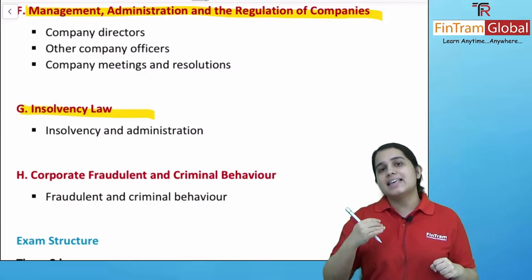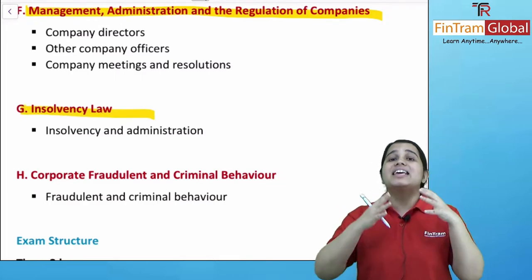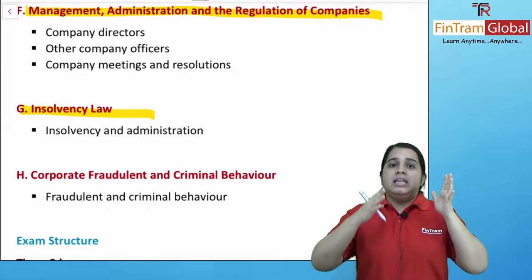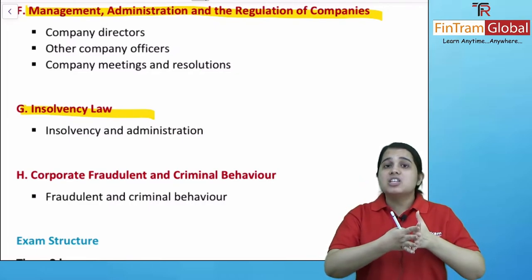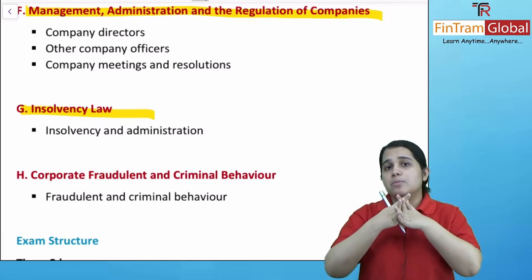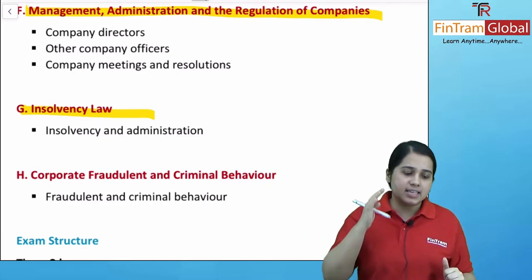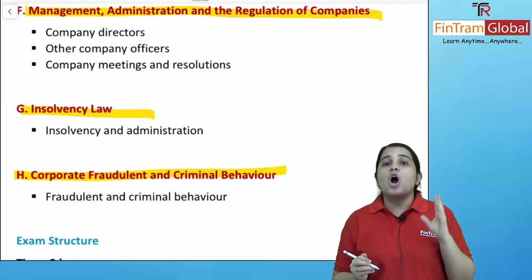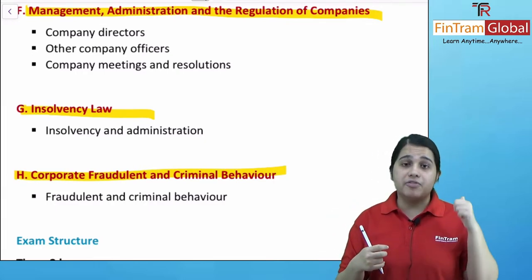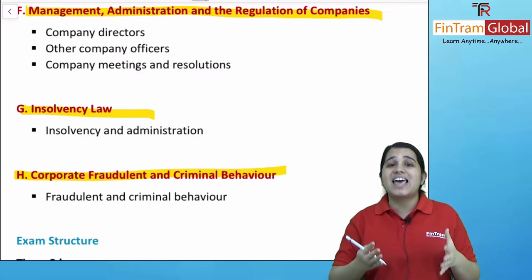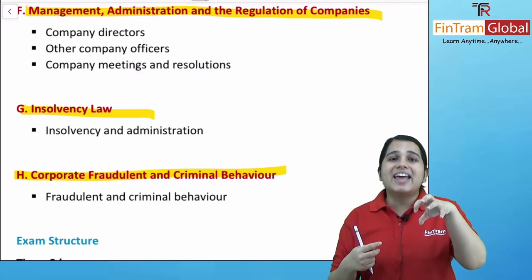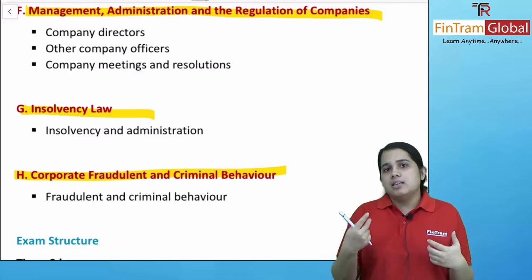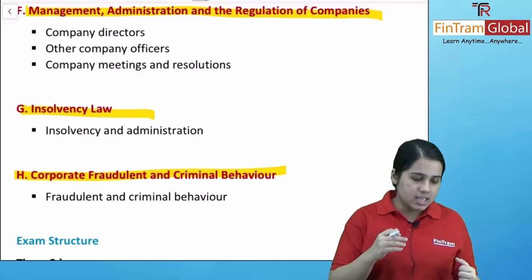Finally, you will move to the next syllabus area which is all about your insolvency law — when a company becomes insolvent, what is administration, which company can go into administration, which can go into insolvency, and all of that. And the last syllabus area is corporate fraud and criminal behavior. Here you will try to understand what exactly is fraud, corporate fraud that takes place in these organizations, and some criminal behavior activities.